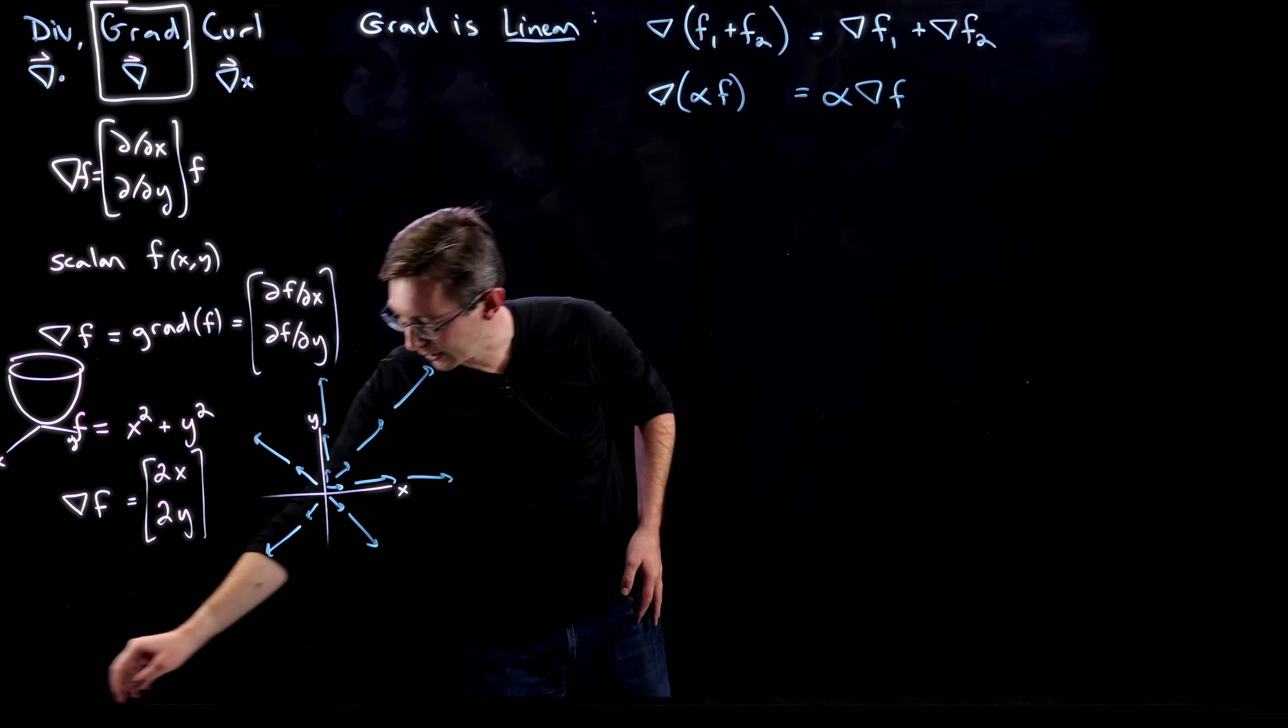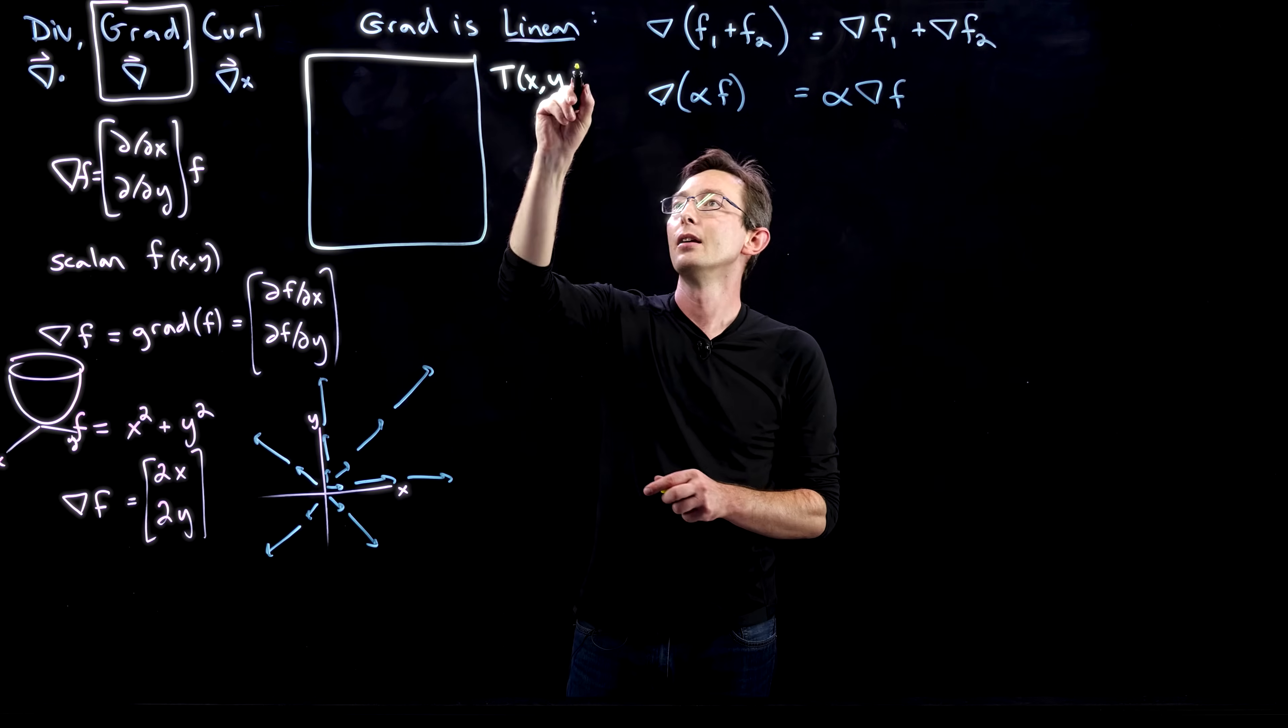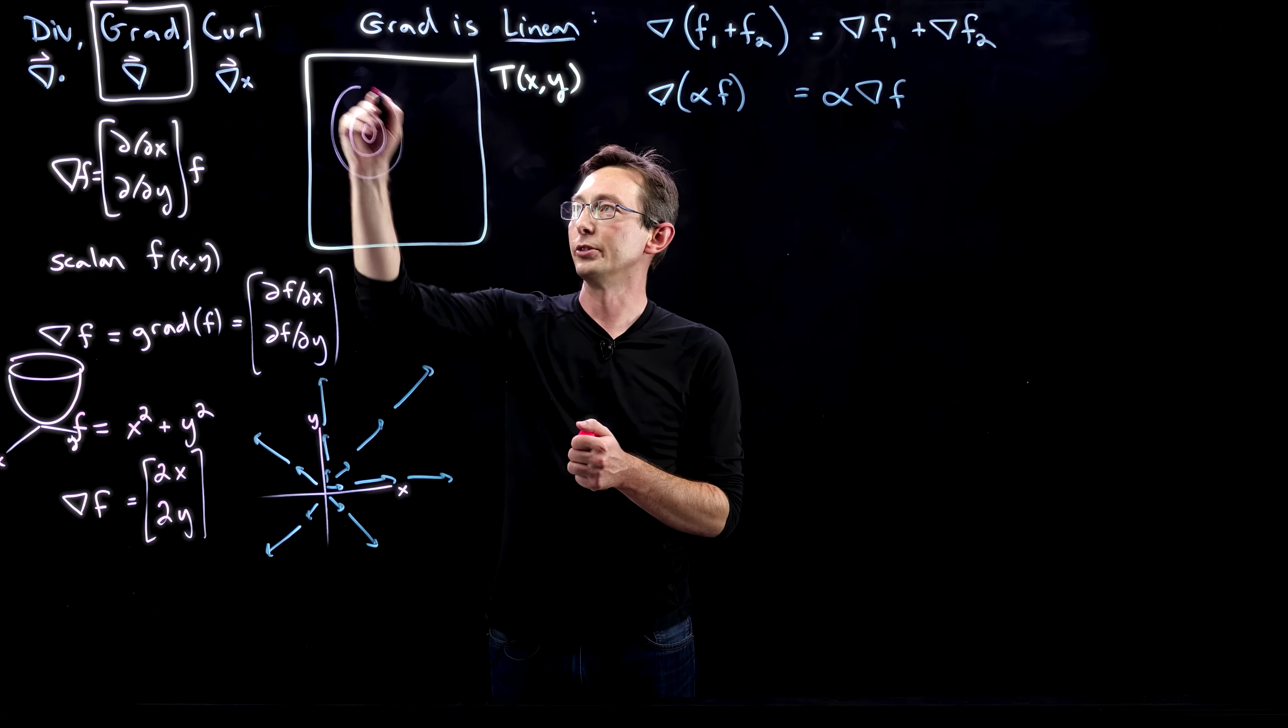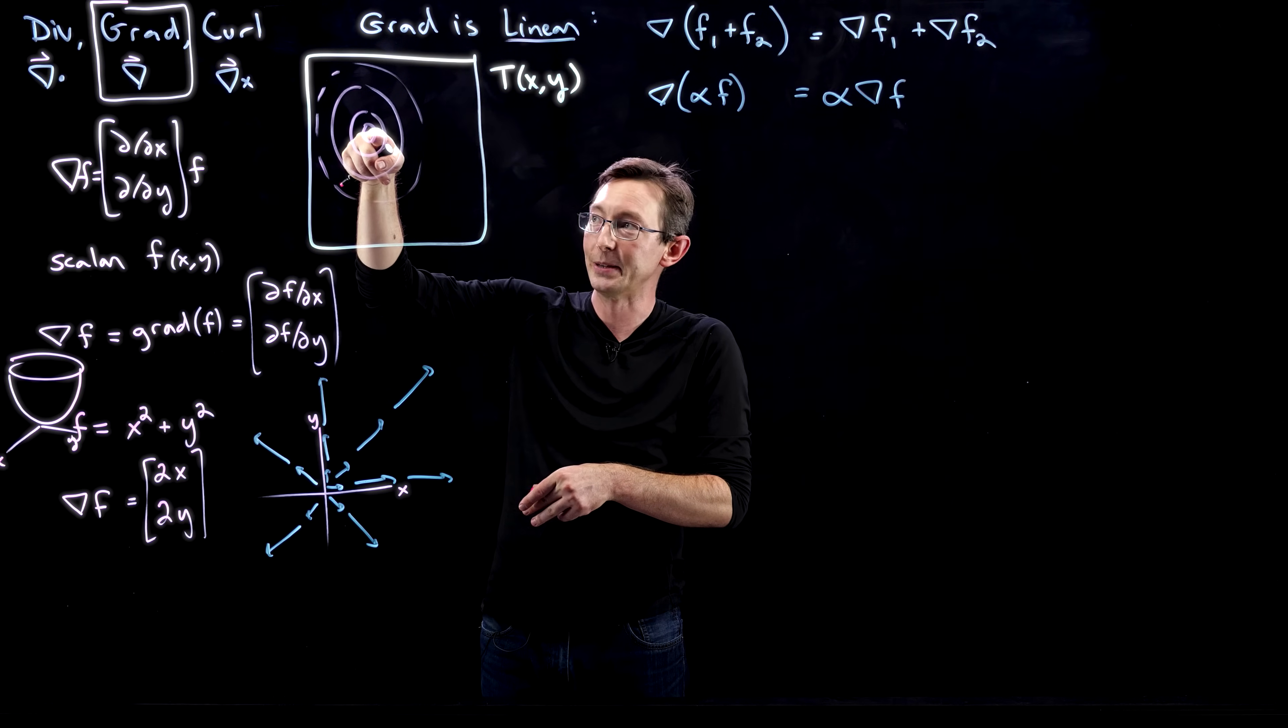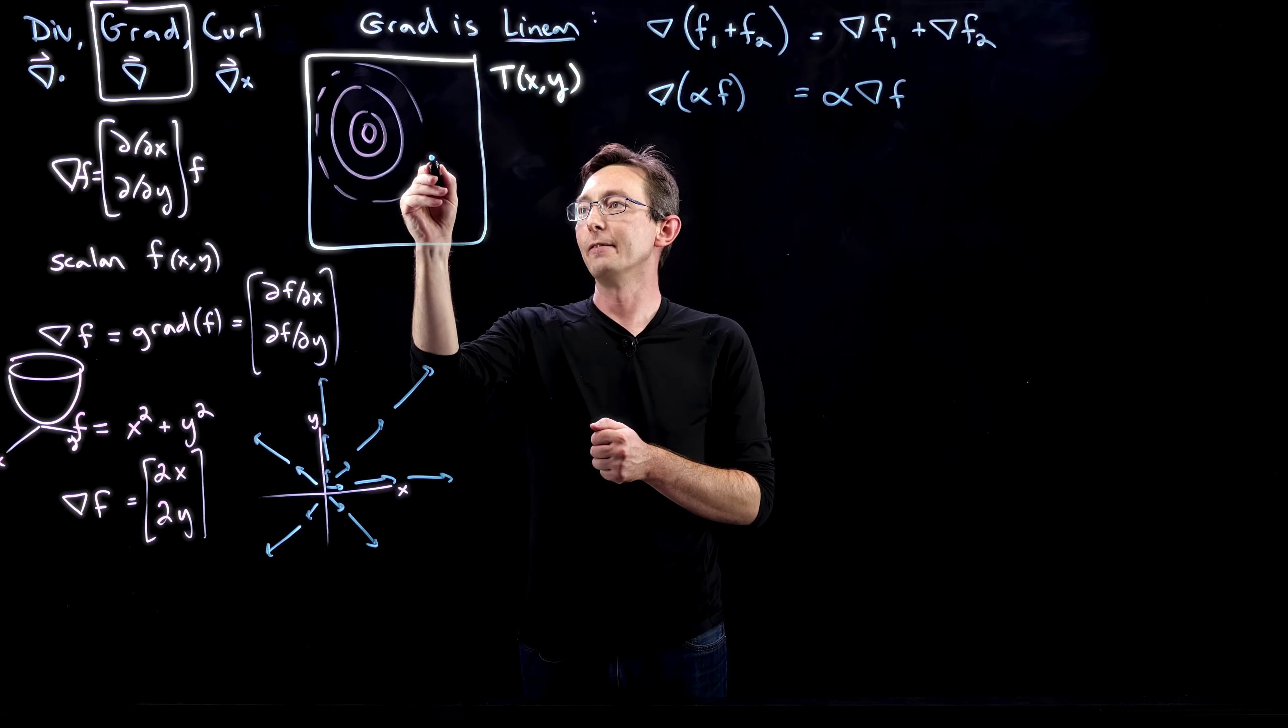A couple more examples of the gradient. This is one I've given you a few times, but I really like it. If I take the gradient of a temperature field T(x,y), let's say that temperature field is going from hotter to colder. Maybe I have a blowtorch, and this is a metal plate. I hit this with a blowtorch for 10 seconds and then let it go, so it's hot in the middle, cold on the outside.